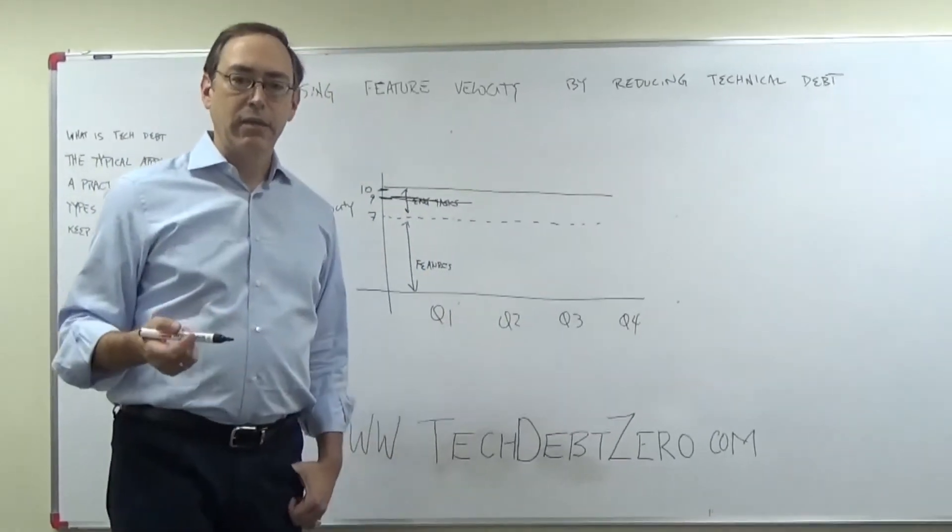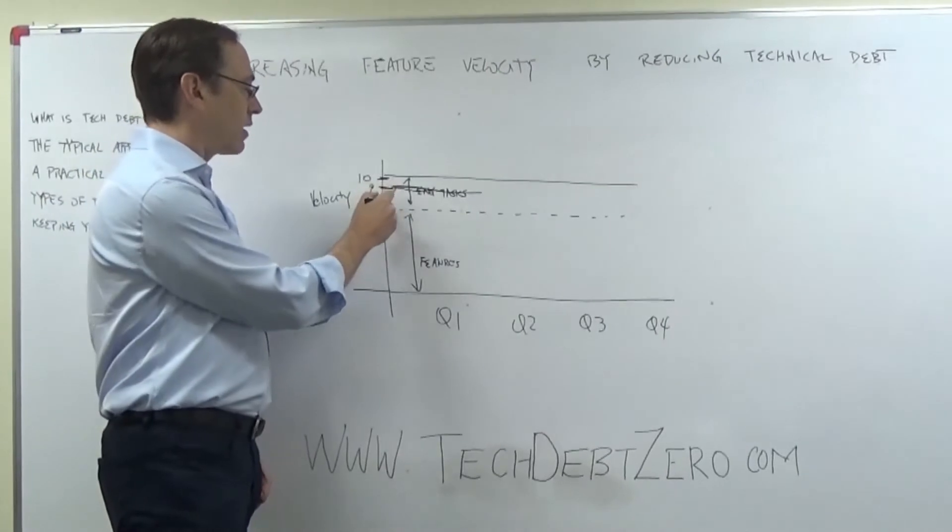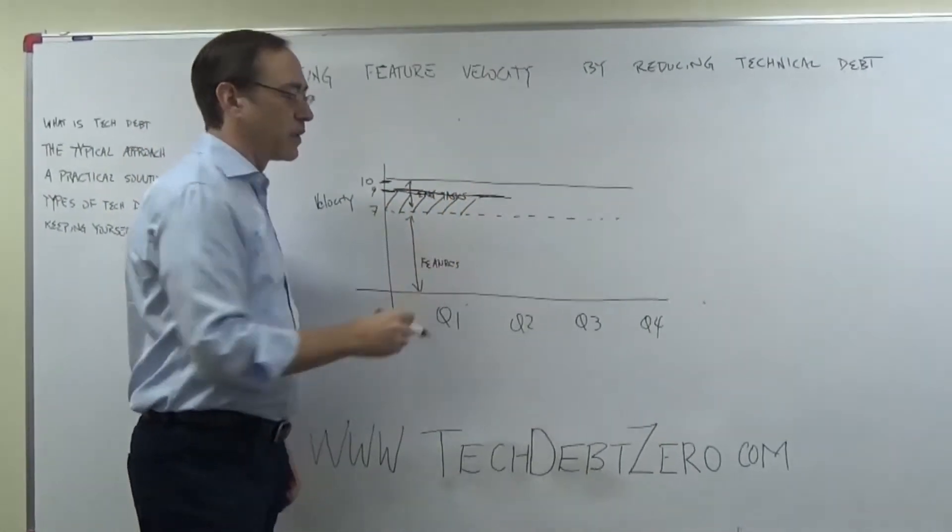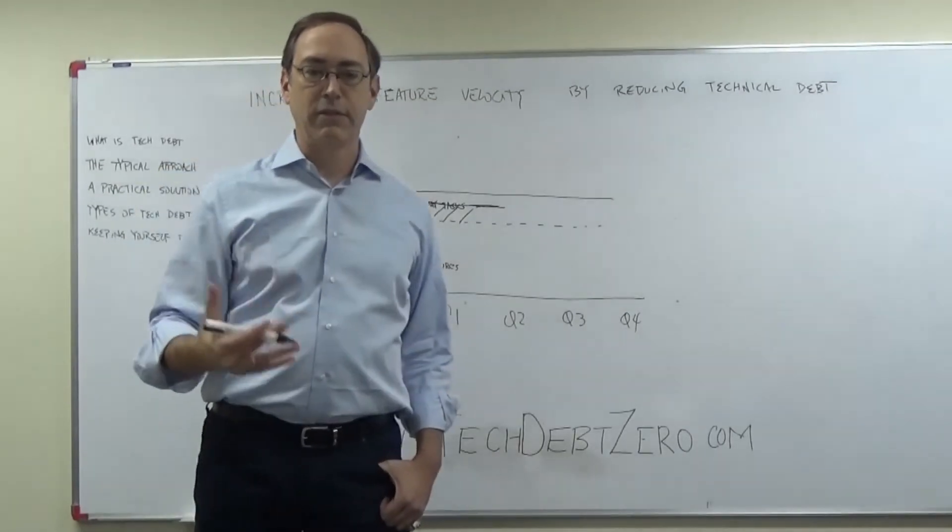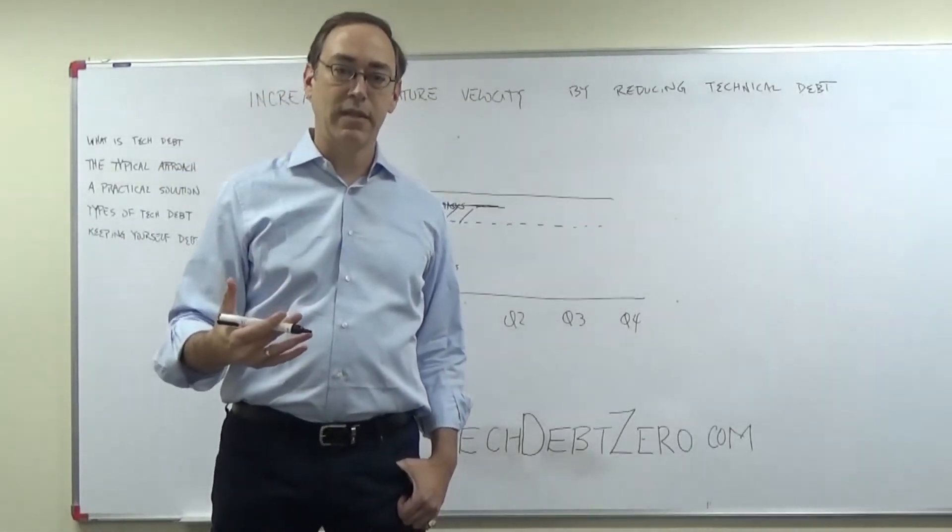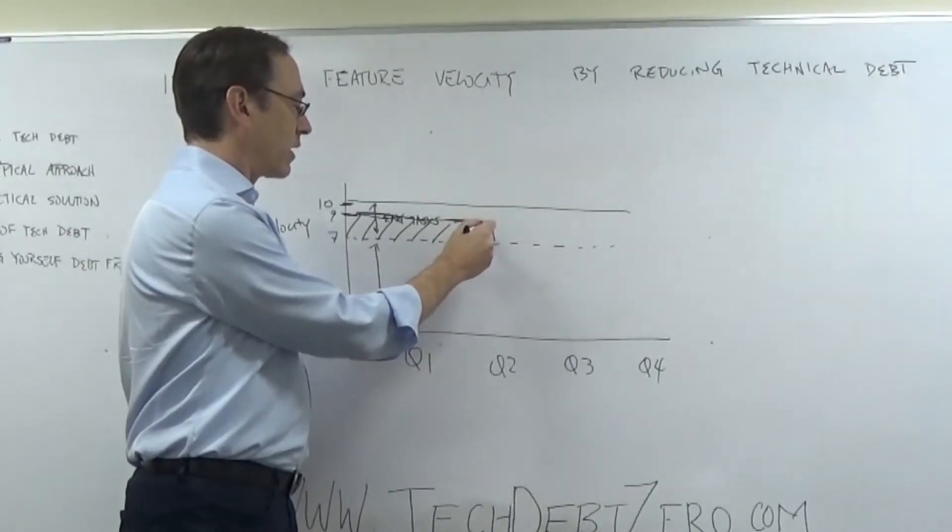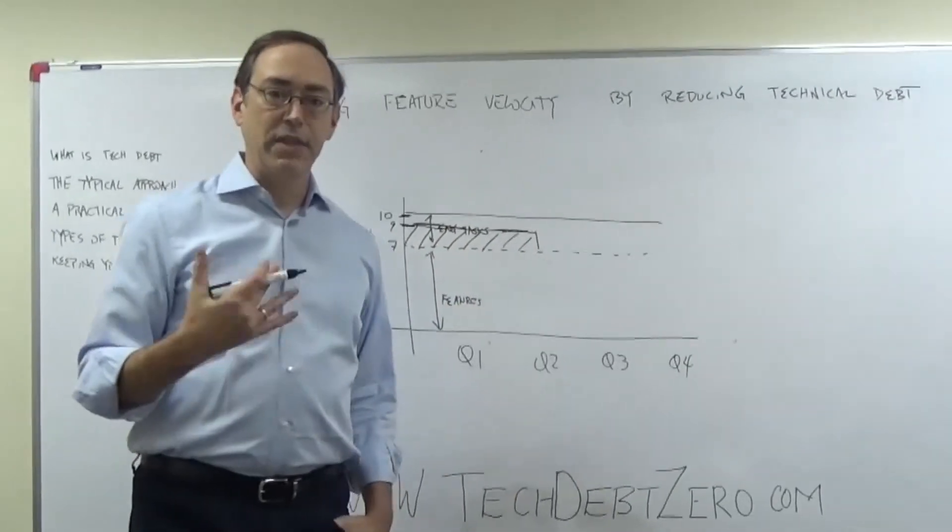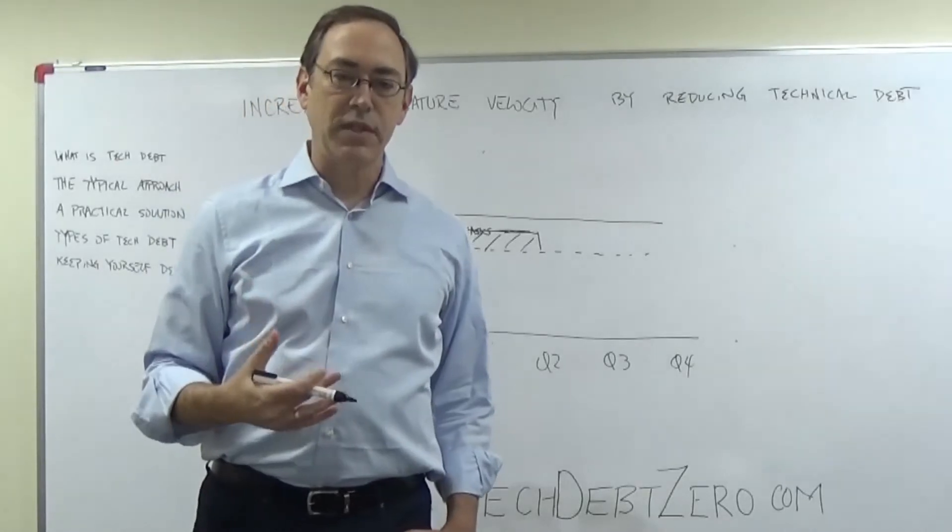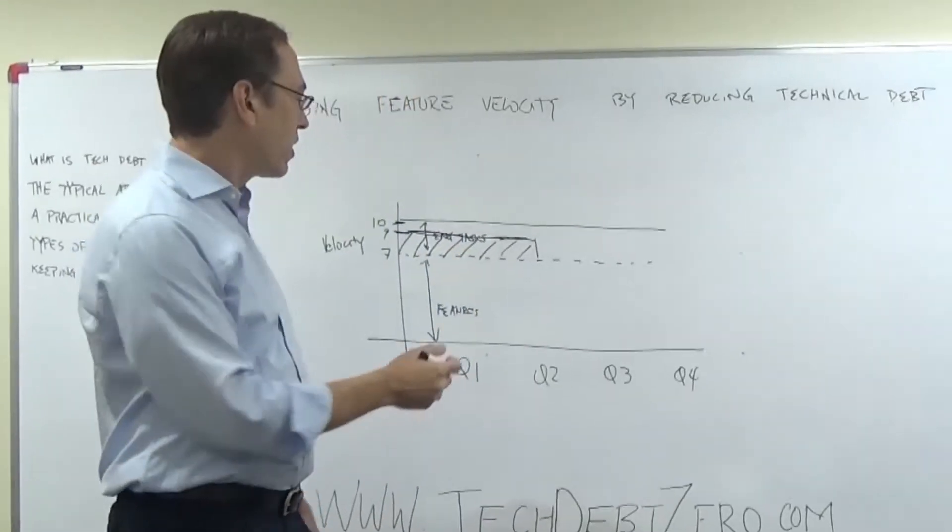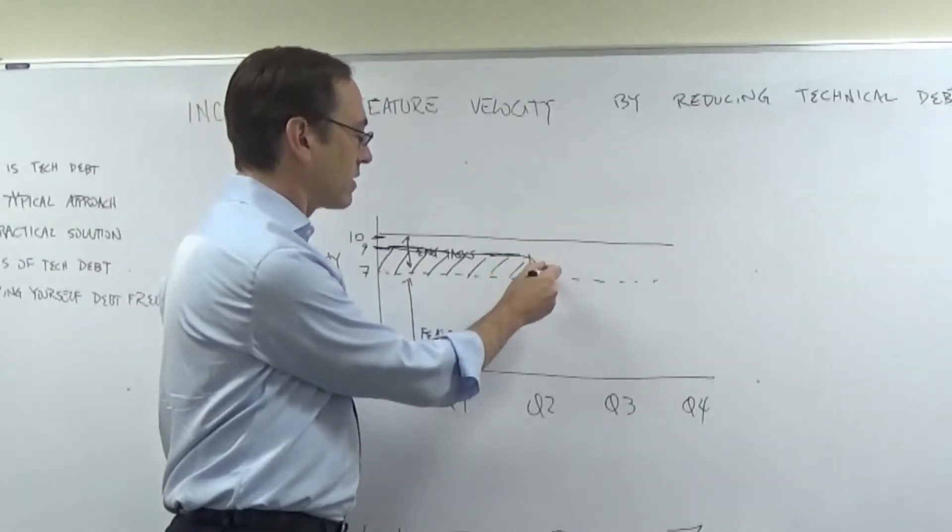The analogy of debt comes in because the area here, this is the amount of time that you've been, let's say, overspending, over delivering features relative to what your capacity is, times the magnitude of that overspending. That's the amount of debt that you're spending. That's the amount of debt that you've accumulated. And the debt analogy is really a good one because what ends up happening in these situations is that you find your velocity declines over time.